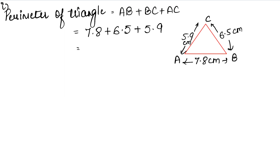Adding the decimal parts: 8 plus 5 plus 9 is 22, carry 2. Adding the whole number parts: 7 plus 6 plus 5 is 18, plus 2 carry is 20. So the answer is 20.2 cm. Since the unit is in cm, the answer is also in cm. 20.2 cm is the answer.